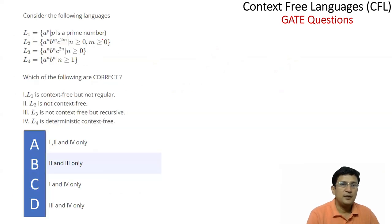Next question: L1 is the language a raised to the power p where p is prime - not regular and not context free. L2 is a power n, b power n, and c power 2m. L3 is a power n, b power n - not context free. L4 is a power 2n.